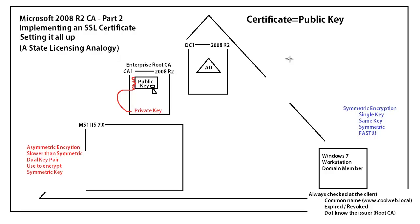Welcome to this Microsoft 2008 R2 CA Part 2 - Implementing an SSL Certificate, Setting It All Up video presentation. We're going to be using a state licensing analogy. Basically it goes like this: you want to set up a website and have a certificate? You want to set up a business and have a license? You got to have a CA - some way to go get that certificate.